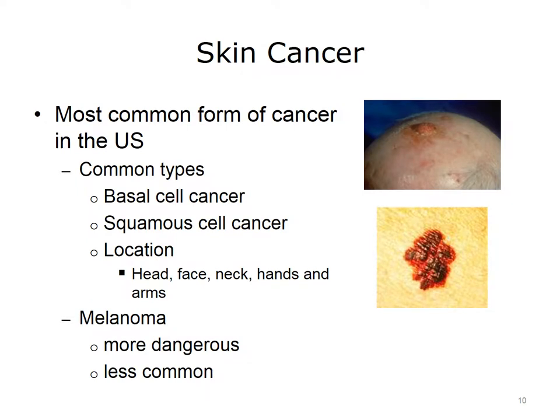The next integumentary system condition is skin cancer, the most common form of cancer in the United States. Each year, about one million people in the U.S. find out that they have skin cancer. Skin cancer is 100% curable if found early and treated right away. The two most common types are basal cell cancer and squamous cell cancer. These are slow-growing cancers that seldom spread to other parts of the body and are usually found on the head, face, neck, hands, and arms.